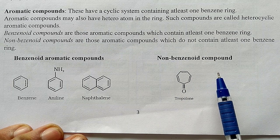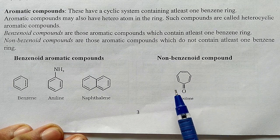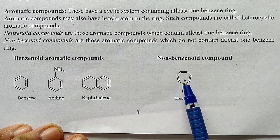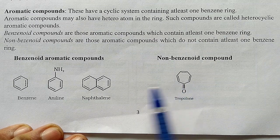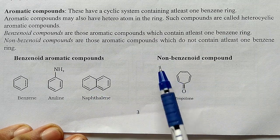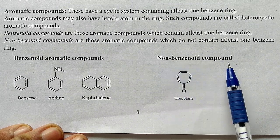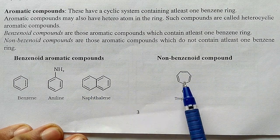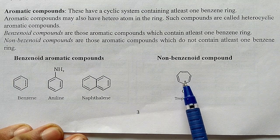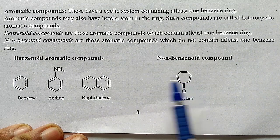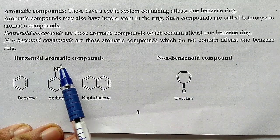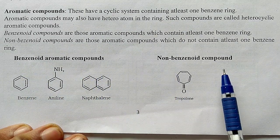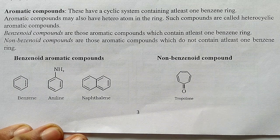Non-benzenoid compounds are also aromatic compounds — they show all the behavior and properties of aromatic compounds, but they do not contain a benzene-type ring. They don't contain a six-membered ring; in spite of that, their behavior is similar to aromatic compounds. So these are called non-benzenoid compounds, as opposed to benzenoid compounds.